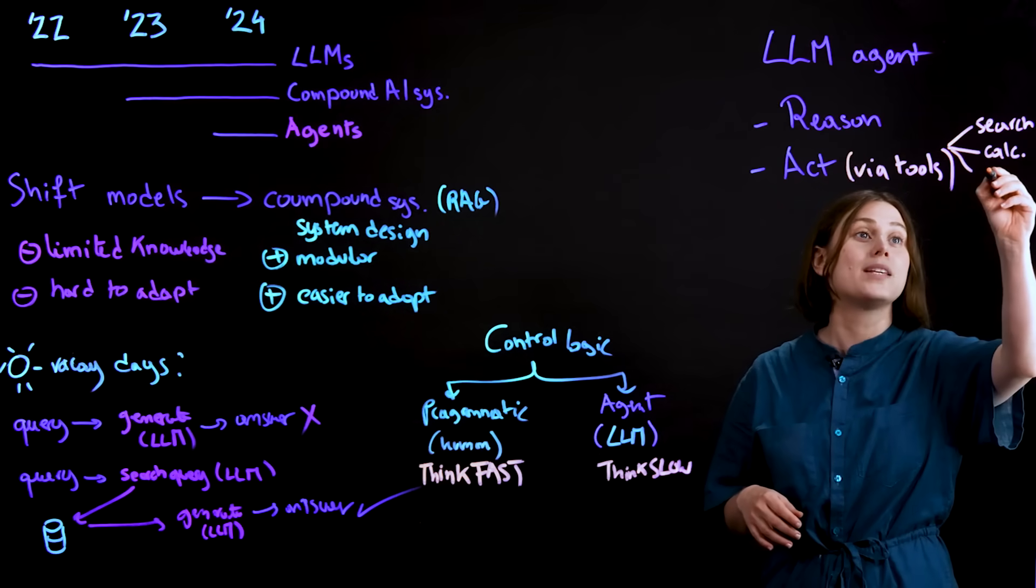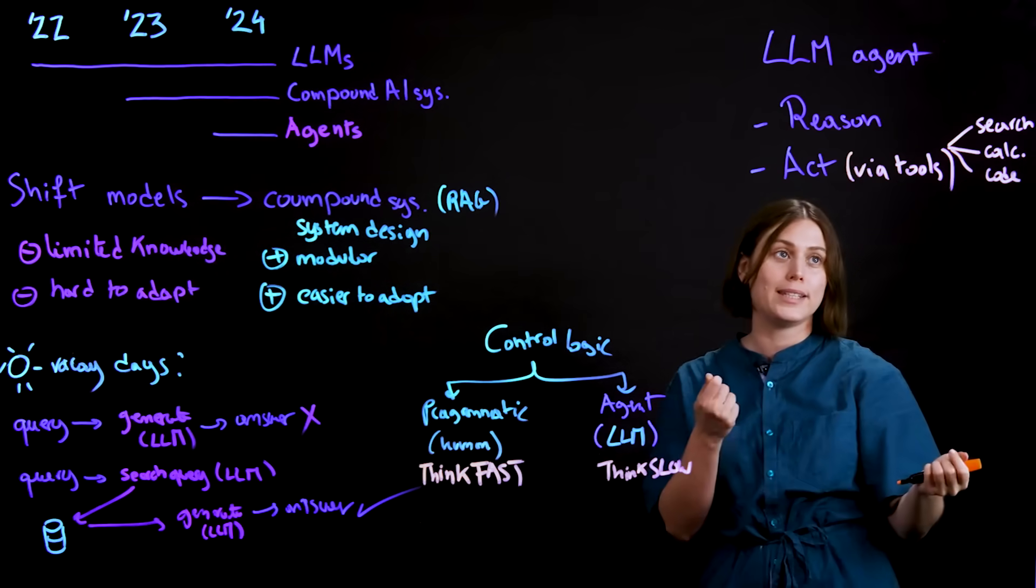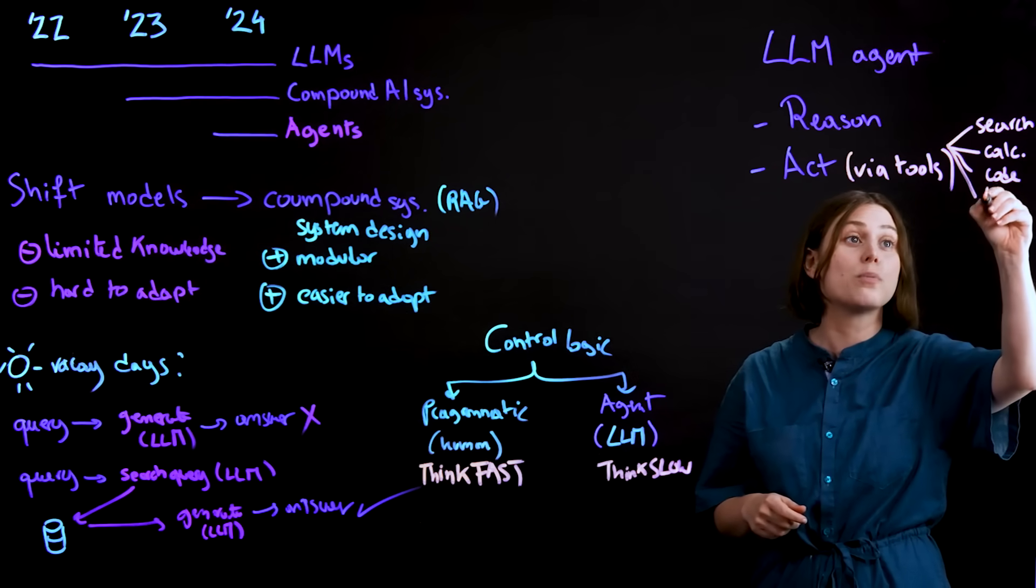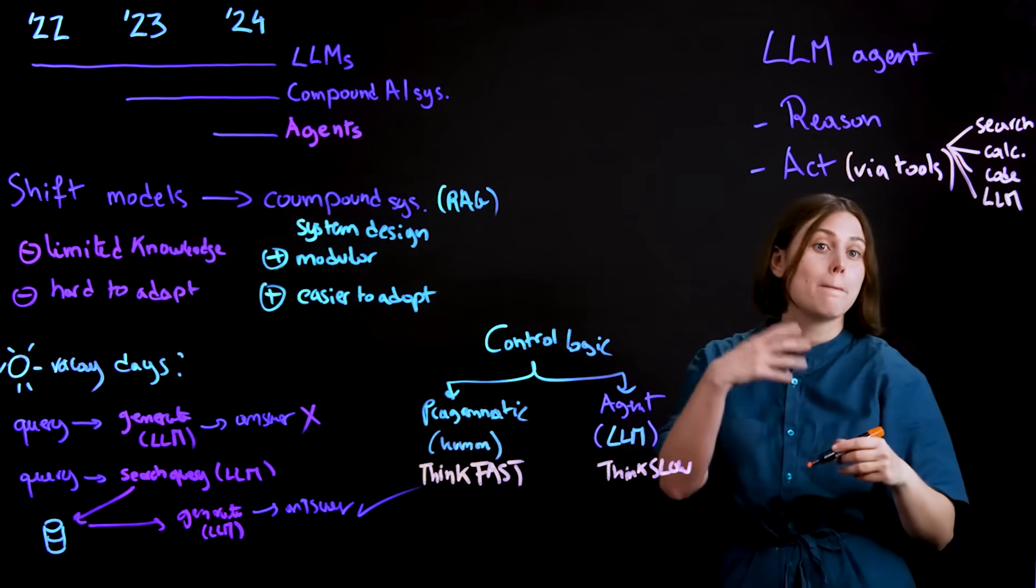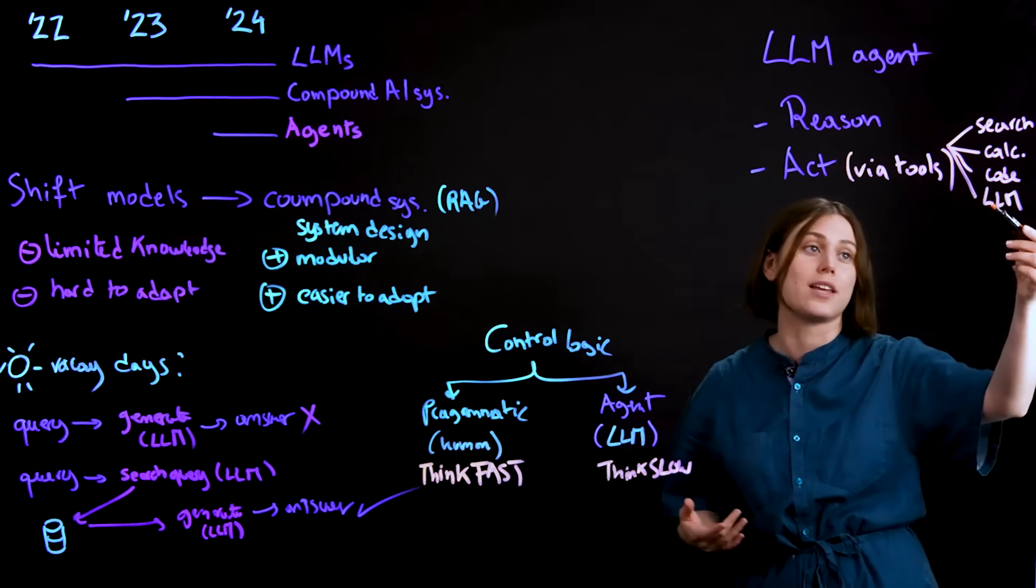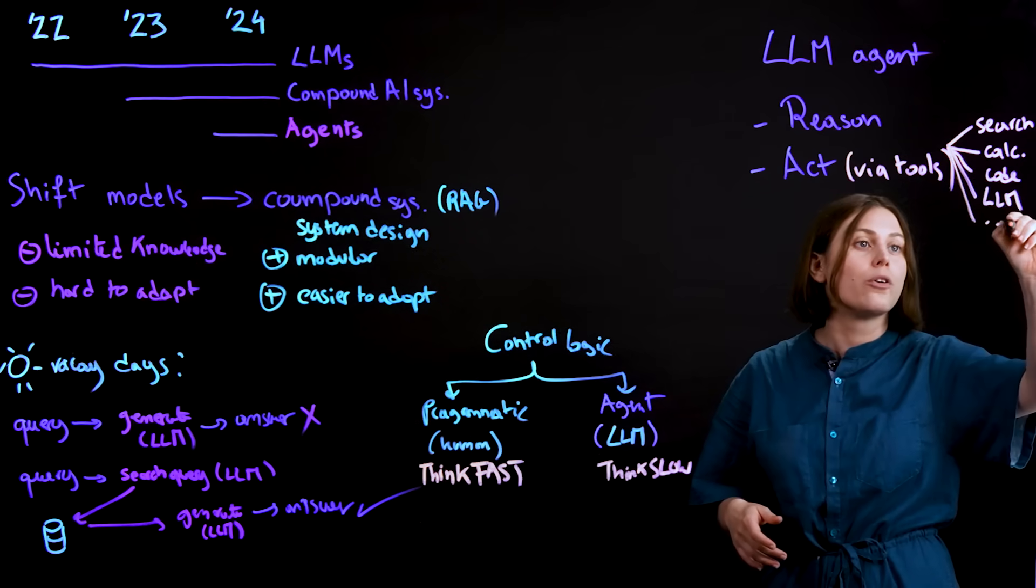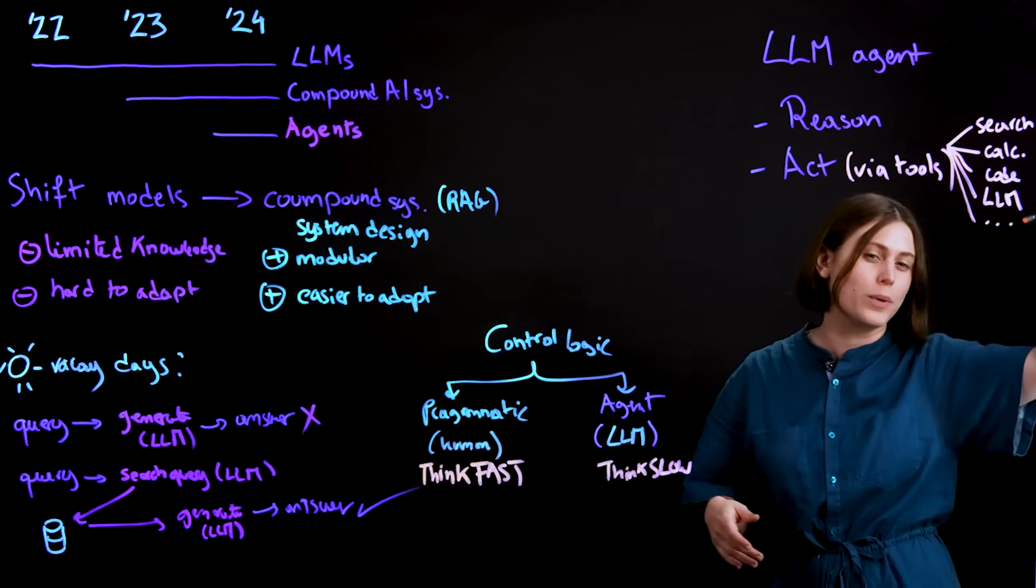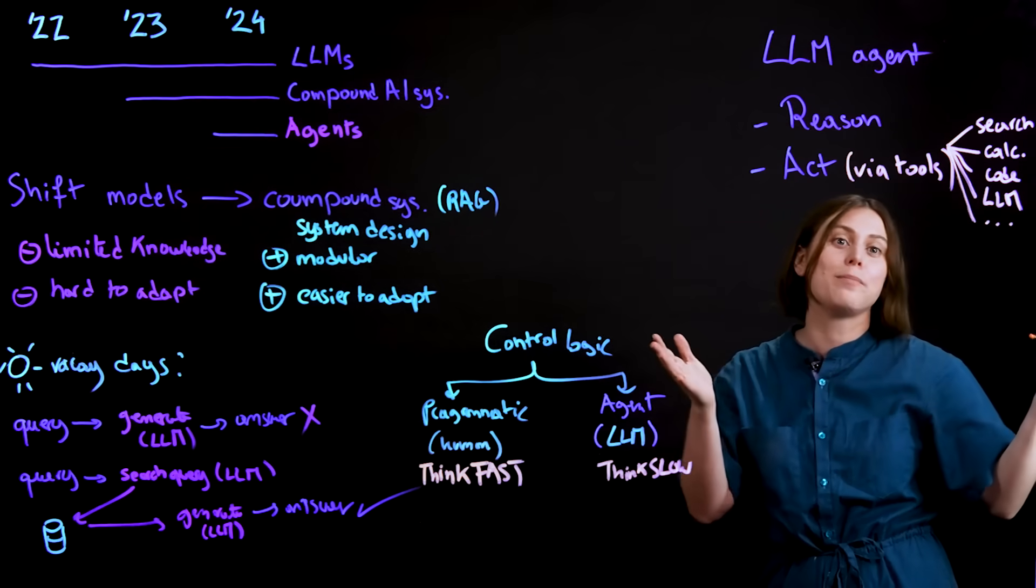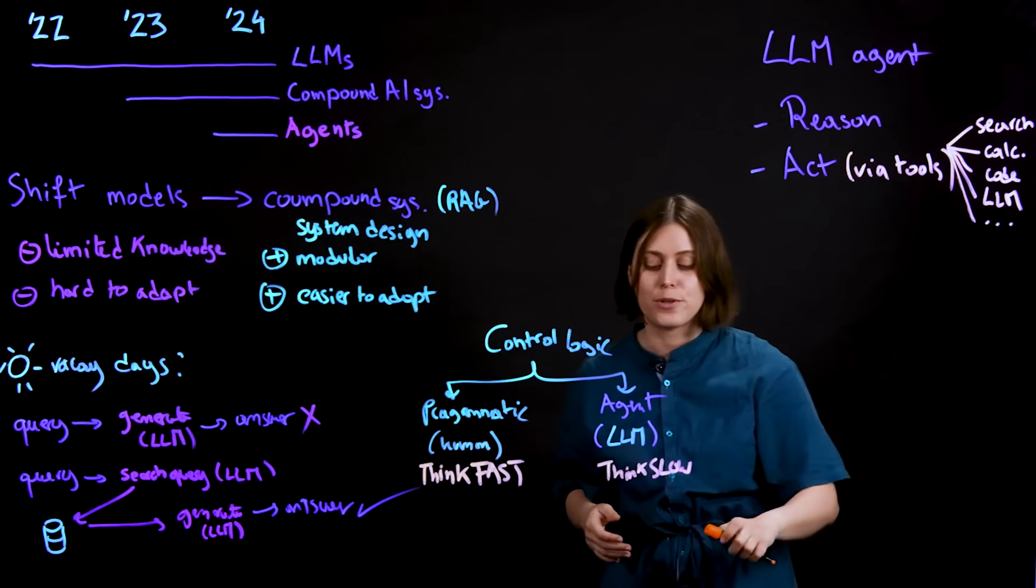This could be a piece of program code that maybe might manipulate the database. This can also be another language model that maybe you're trying to do a translation task, and you want a model that can be able to do that. And there's so many other possibilities of what can be there. These could be APIs, basically any piece of external program you want to give your model access to.